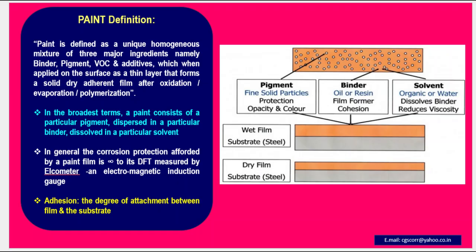Definition of Paint: Paint is defined as a unique homogeneous mixture of three major ingredients, namely binder, pigment, volatile organic compounds, and additives, which when applied on the surface as a thin layer forms a solid dry adherent film after oxidation, evaporation, or polymerization.